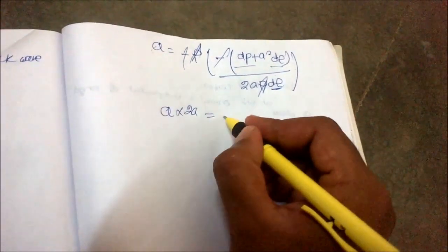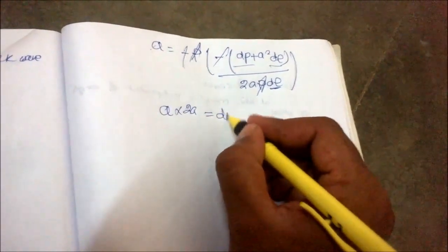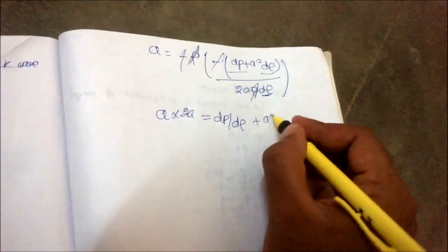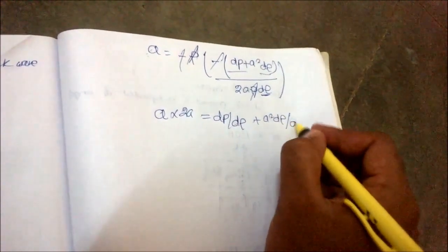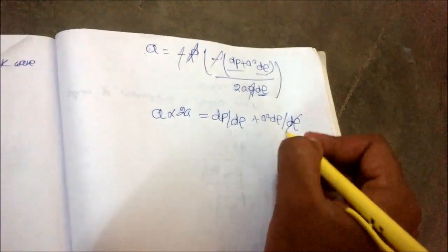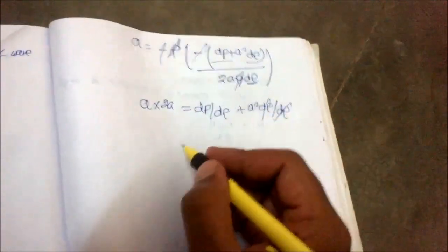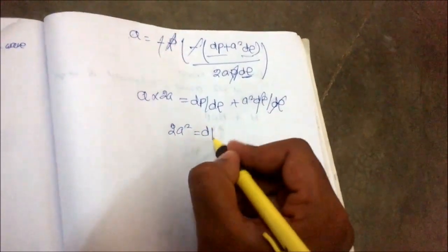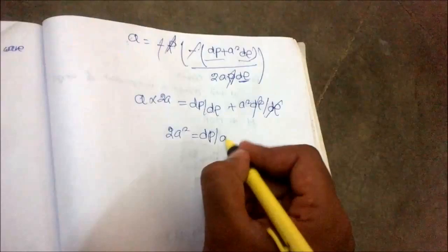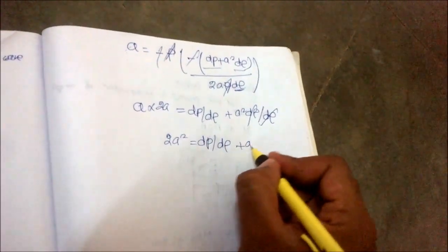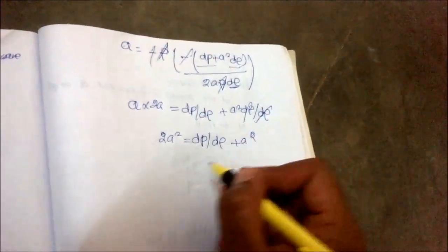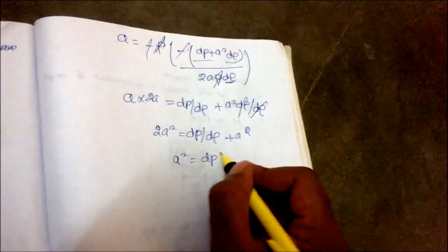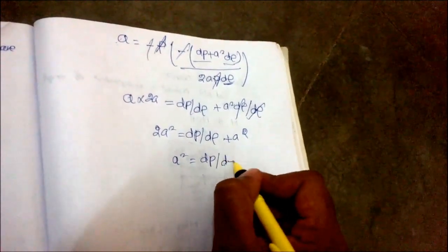Substituting and simplifying: 2A² = dP/dρ + A²·(dρ/dρ), which gives 2A² = dP/dρ + A², and therefore A² = dP/dρ.